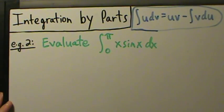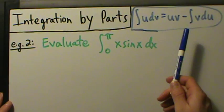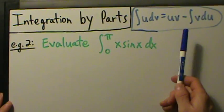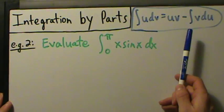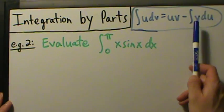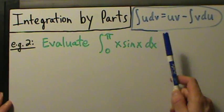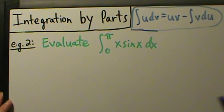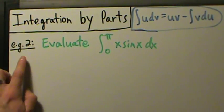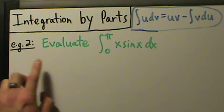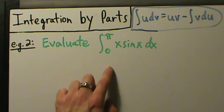Here's example two with integration by parts. In the last few videos we talked about where this formula comes from and why there's no arbitrary constant on the v when we get it from dv. We did an example with an indefinite integral, so now let's go ahead and do example two with a definite integral.